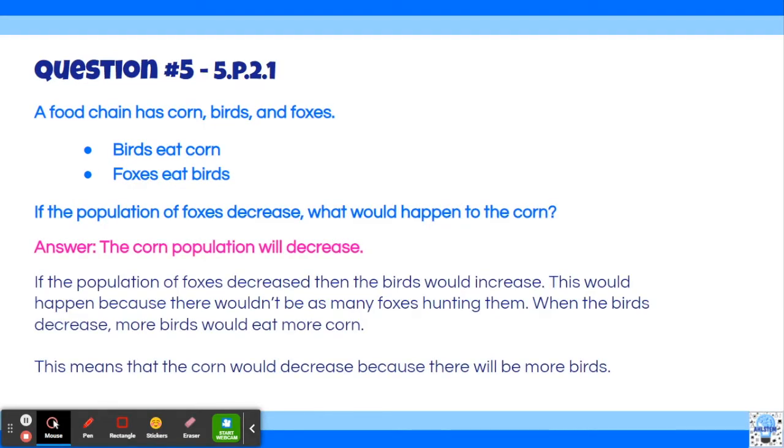Well, the answer is that the corn population would decrease. So let's draw it out. So we have our producer, corn, we have the birds who eat the corn, and then we have the foxes who eat the birds. Very simple diagram.